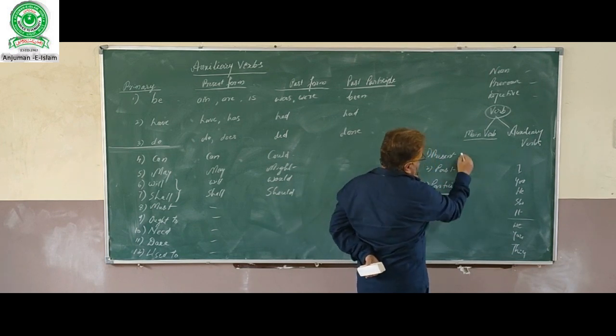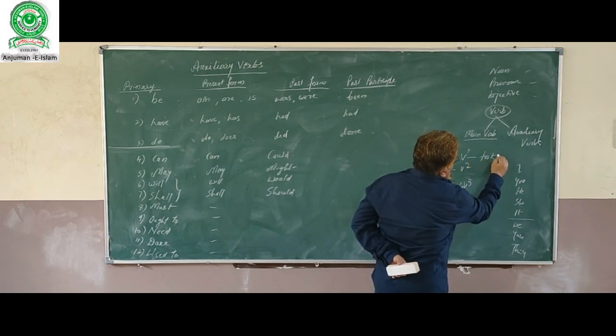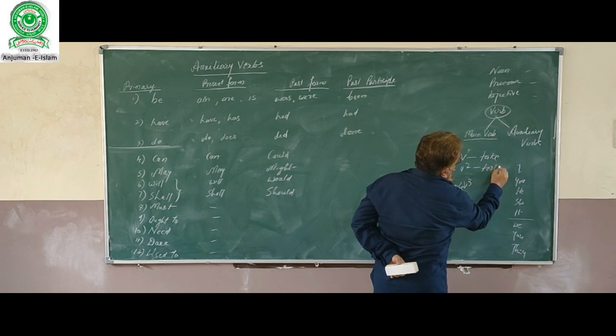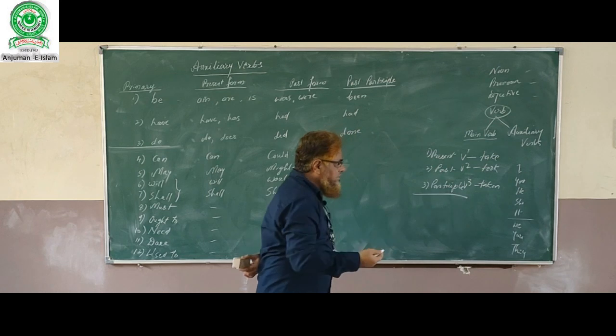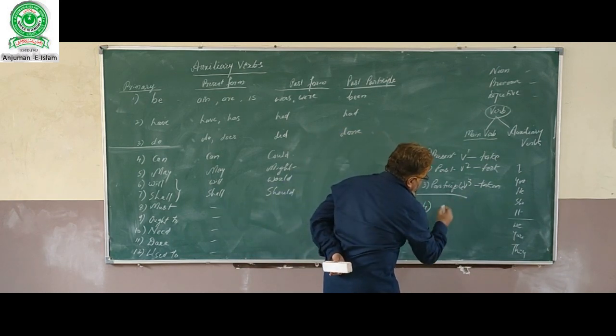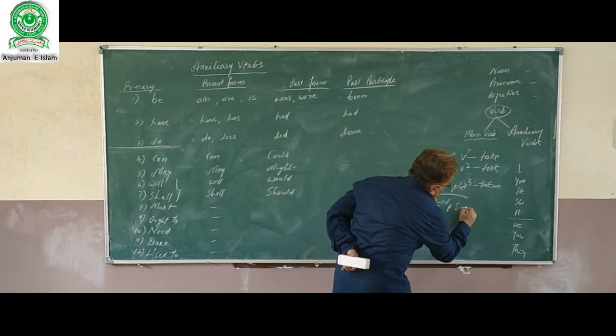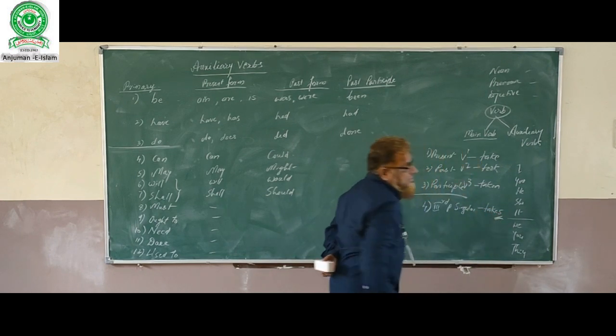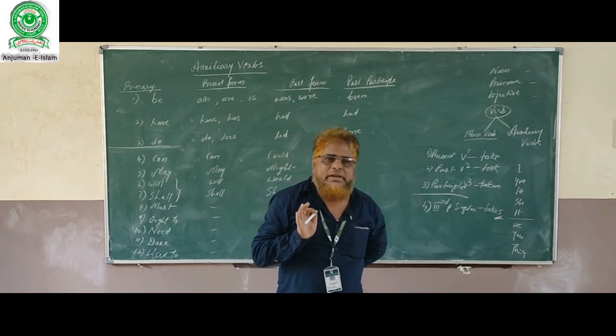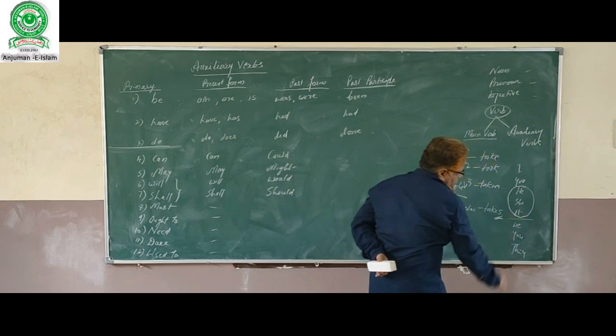Everyone has got basically three forms: present form, past form, and participle form. We know V1, V2, and V3. For example, take, took, taken. But actually, we have got two more forms. One is third person singular form, that is 'takes.' This we use only in present simple tense for he, she, it.